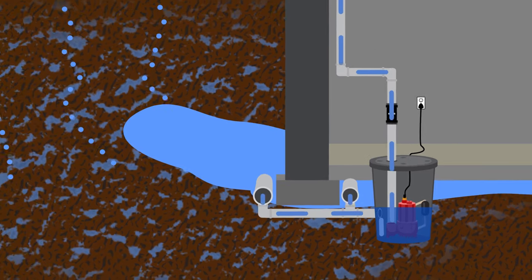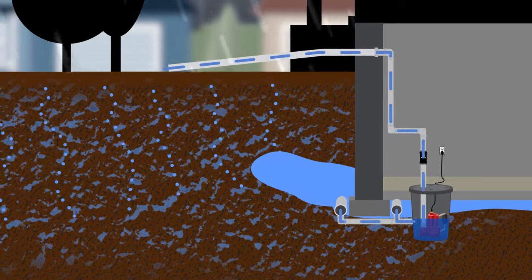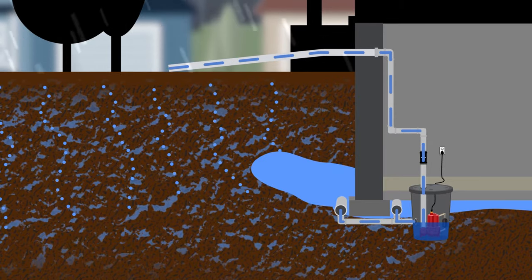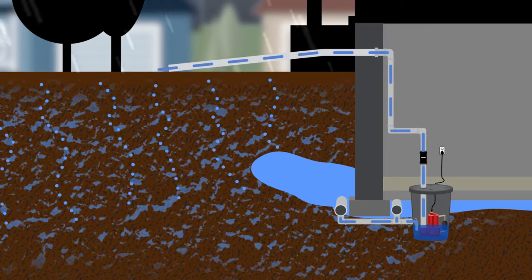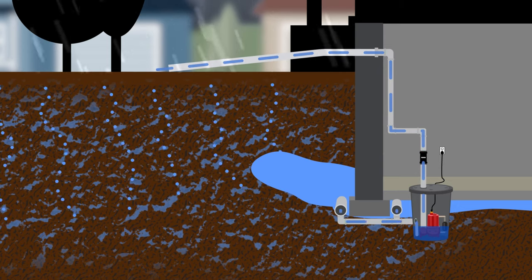The water is then pushed up through a discharge pipe and safely away from your home. As the water level drops, the float switch will disengage and turn off the pump.